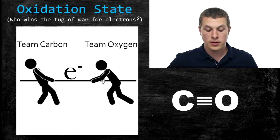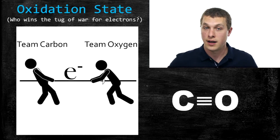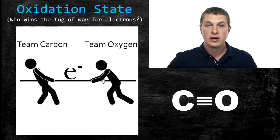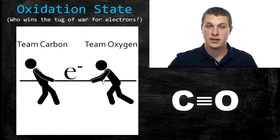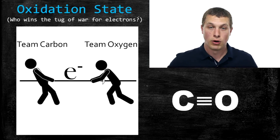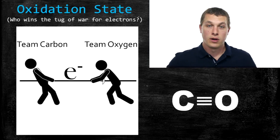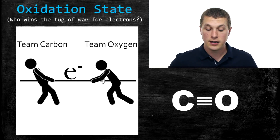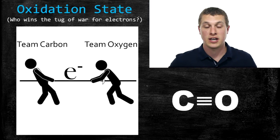Now, you'll notice that carbon monoxide is a molecular compound — it's two non-metals, not an ionic compound. So oxidation state is not the same thing as charge, though it's easy to get them confused. Oxidation state is telling you how many electrons oxygen would have if it broke up with carbon. It's a bit of a tricky concept, so you'll want to spend some additional time reading your textbook and thinking about what oxidation state means.